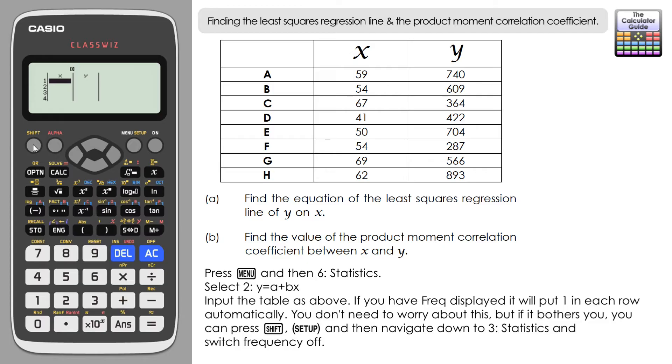But if it does bother you, you can switch that off by going into shift setup. And if you navigate down to statistics, option three here, and then just turn frequency off. Obviously just go back in there and switch that on if you need it for a future question.